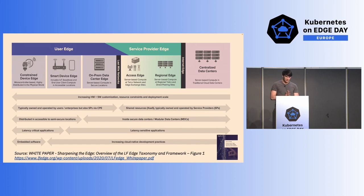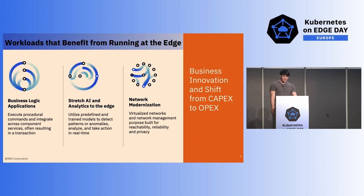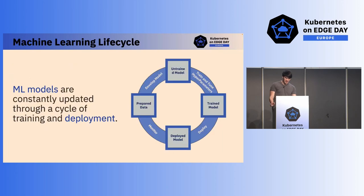This user edge space is essentially the focus for today. As we look at workloads that benefit from running at the edge, we see things like business logic applications and network modernization. The key focus today is stretching AI and analytics to the edge. In this scenario, a user's predefined trained models can be deployed to the edge. Additionally, customers can train models on the edge in real time by capturing data and having models retrained as they operate. The ML lifecycle shows that models are constantly being updated — training, retraining, and deployment — and model deployment is a very key aspect.